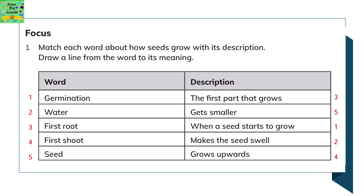First shoot: it is the part of the seed that grows upwards. Seed: it gets smaller as the plant grows.